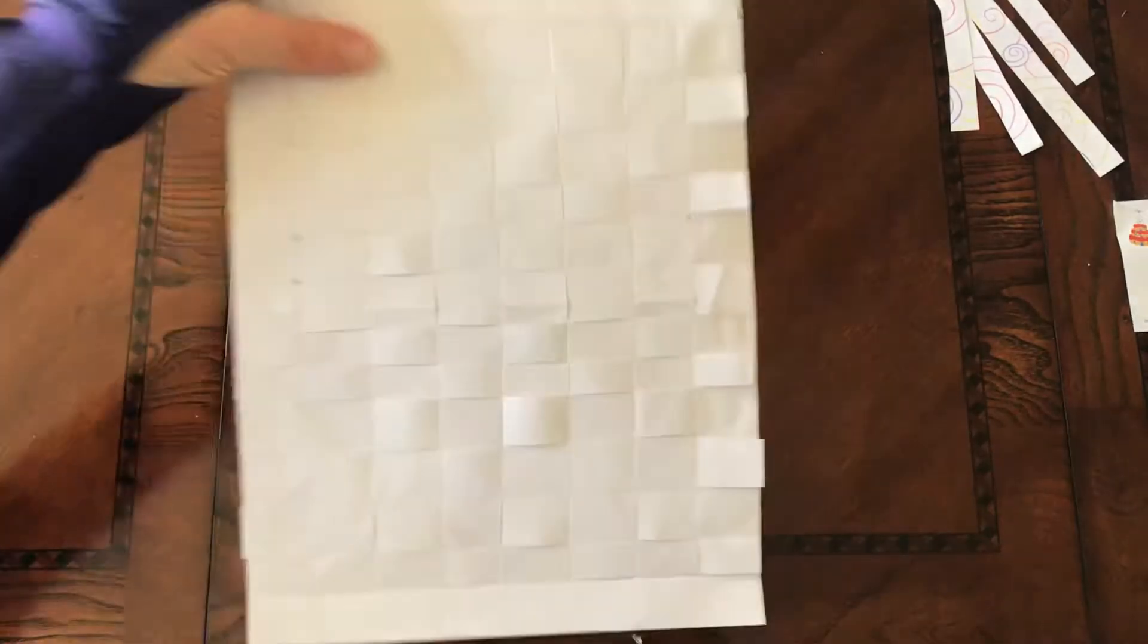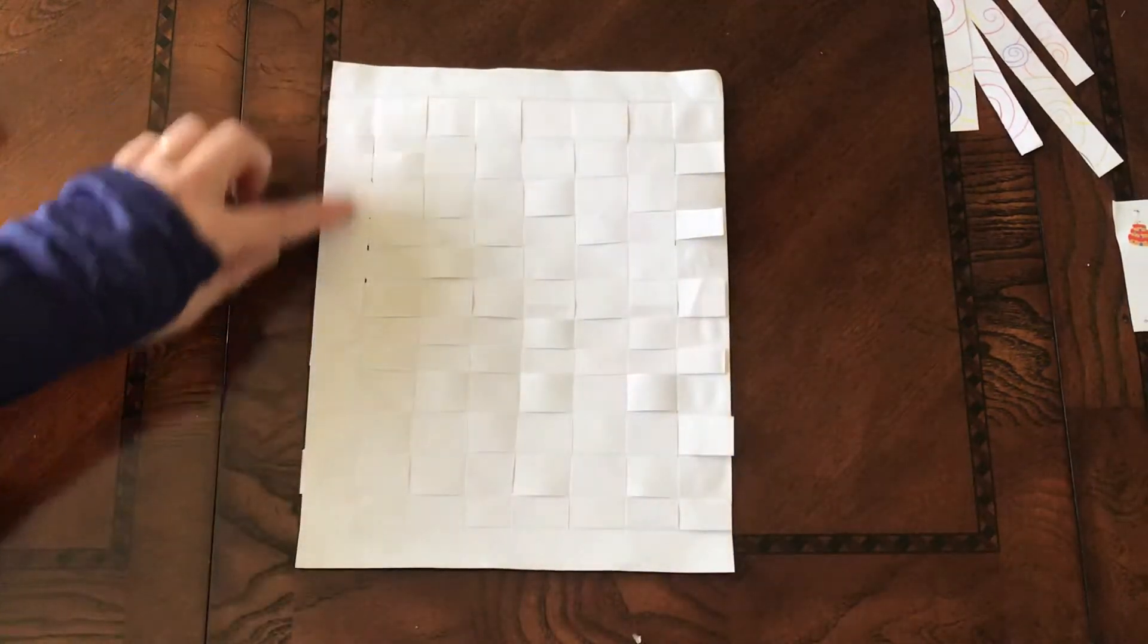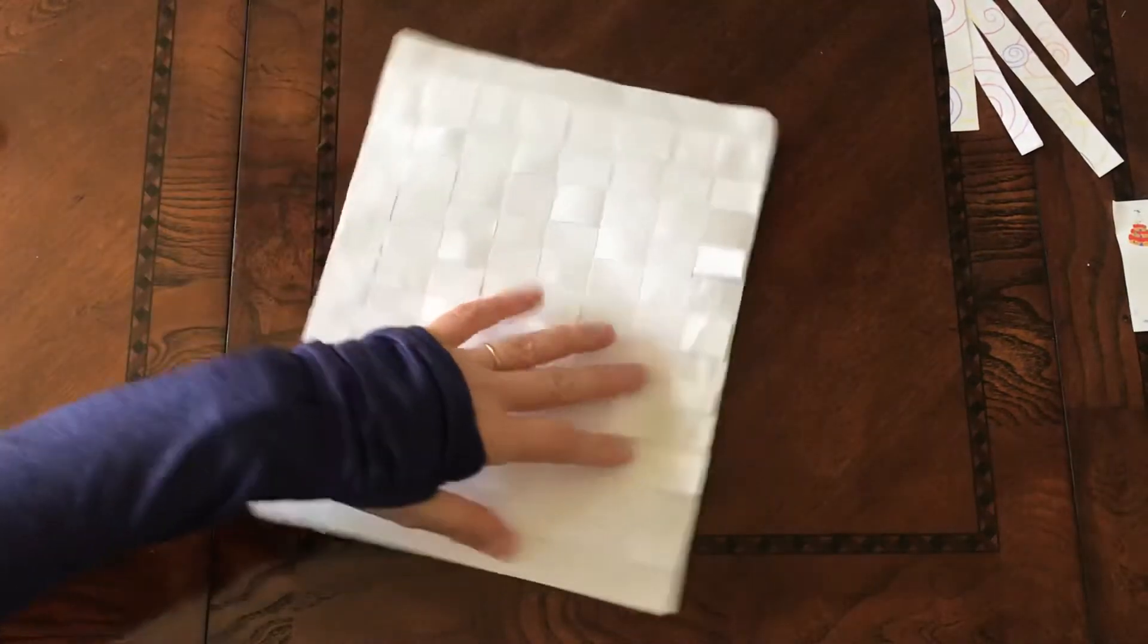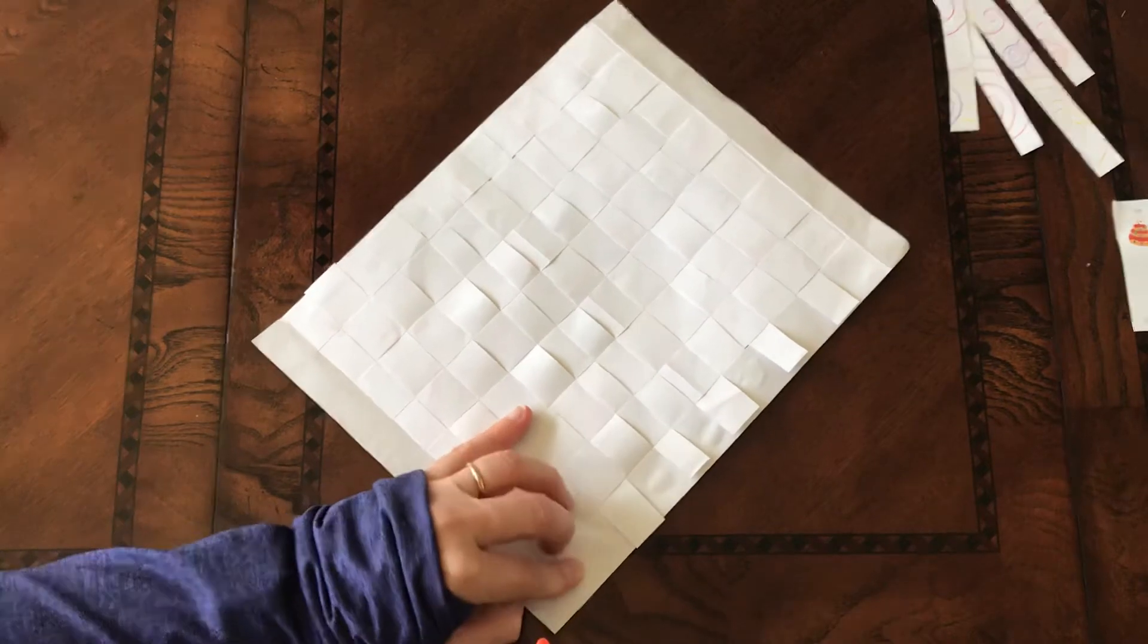And then you're going to flip your paper over and do the same thing to the back side. I have already glued this side down, which is why you're not seeing the little tabs flip up. But we're going to go ahead and glue this all down.